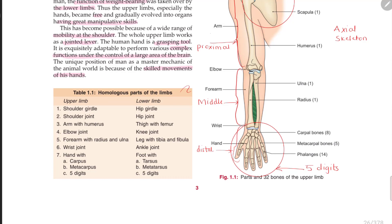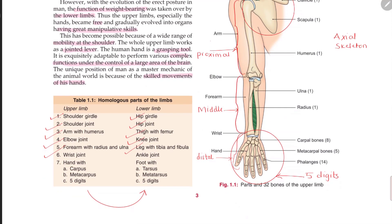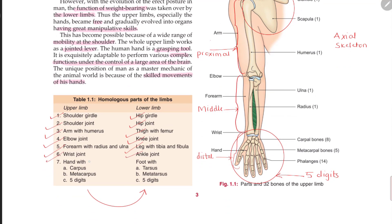The homologous parts of the upper and lower limb are very similar. The shoulder girdle corresponds to the hip girdle, the shoulder joint to the hip joint, the arm with humerus to the thigh with femur, and the elbow joint to the knee joint. The forearm with radius and ulna corresponds to the leg with tibia and fibula. The wrist joint is similar to the ankle joint, and the hand with carpus, metacarpus and five digits corresponds to the tarsus, metatarsus and five digits.